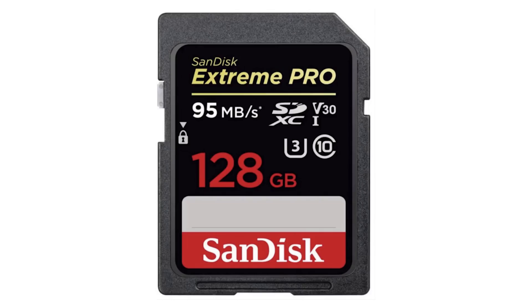One other thing they seem to do is put more than one of these classifications on the card. If the numbers are different, you just want to take the highest number. So for instance if you have a C10 and V30, go with the V30.